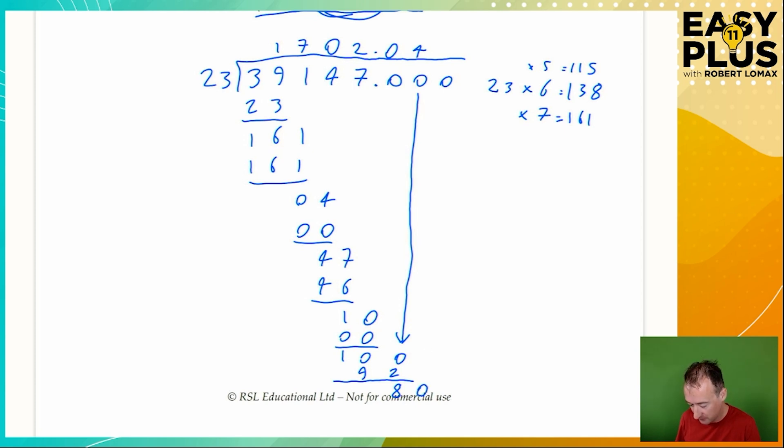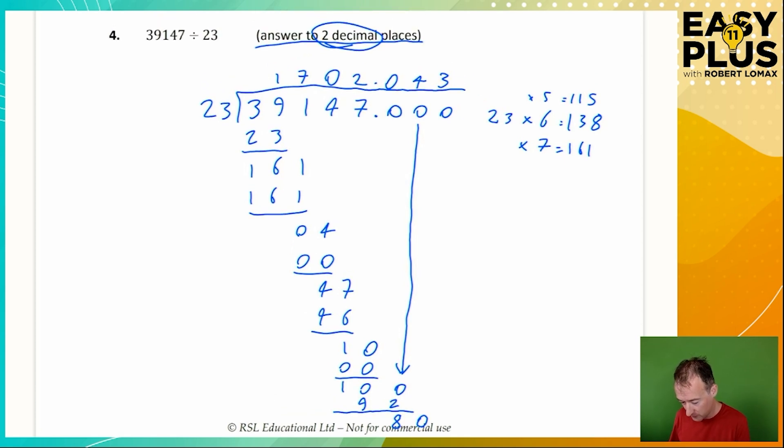And now we need to bring down the next 0. How many times does 23 go into 80? Well, we know that 4 times 23 is 92, as we said, so it must be 3 times. Now, at this point, we could keep carrying on, possibly forever. 3 times 23 is 69, subtract, and so on. But we only need to find our answer to 2 decimal places. And we've already found an answer to 1, 2, 3 digits after the decimal point, and that's all we need to round it to 2 decimal places.